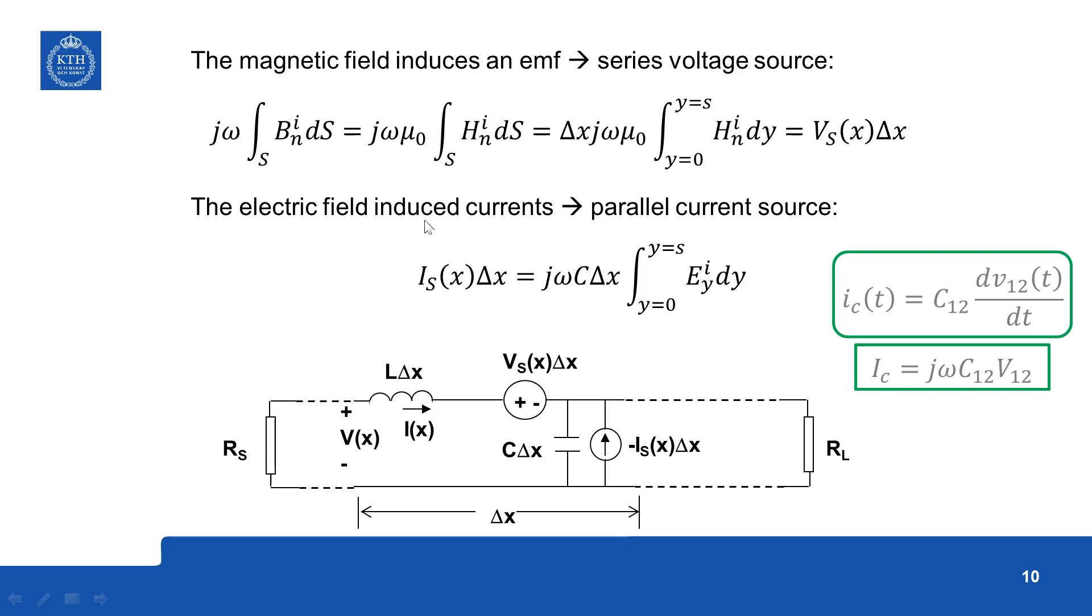Now electric field induced currents, that will be the parallel current source, so that is given by C times rate of change of voltage, so it is this equation we are writing. So instead of coupling capacitance, it is this capacitance that we have here, so that is the only difference.